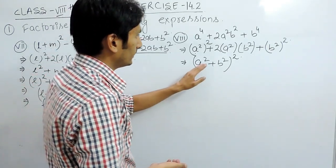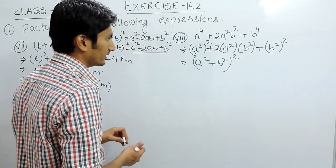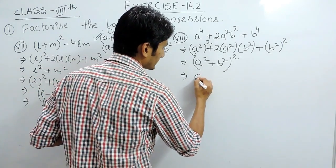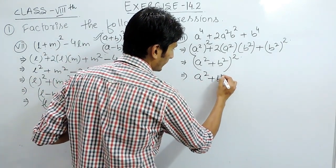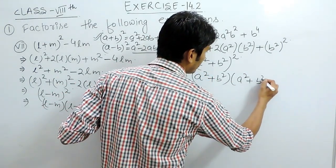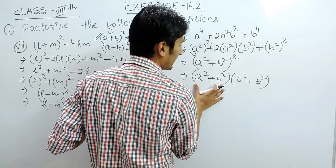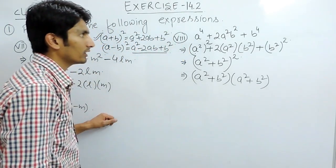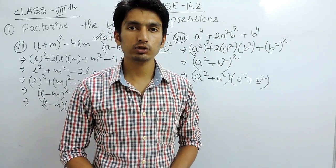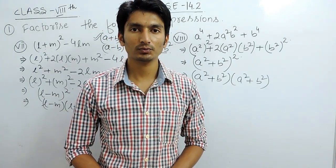So we have converted this into factor form. Now, this again can be written as a square, b square and again multiplied with same term. Because this square means same multiplied with same. So this is how we can solve the first question. In the next, we will solve the further questions. Thank you.